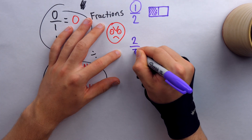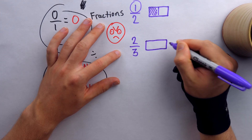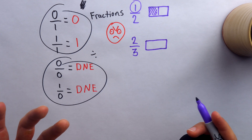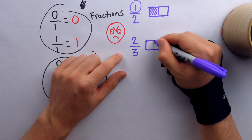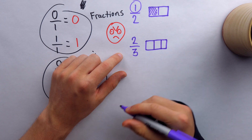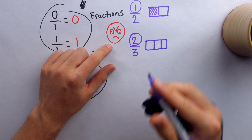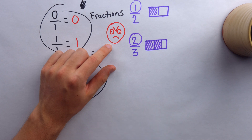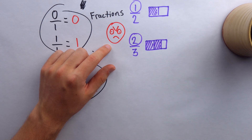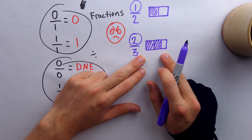For another example, consider the fraction two-thirds. Again, we have a whole, which we can represent as a rectangle. It's been cut into some number of parts — how many? The denominator tells us: it's been cut into three parts. How many of the parts do we have? The numerator tells us: we have two of the three parts. We can represent that by shading two of those three parts in, and that's the fraction two-thirds represented visually.